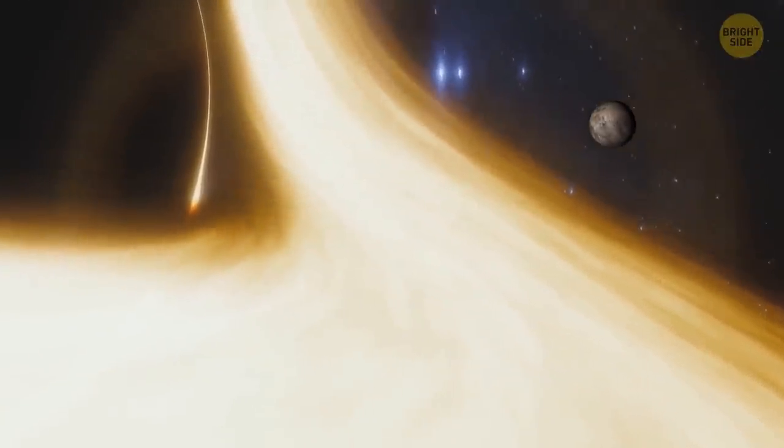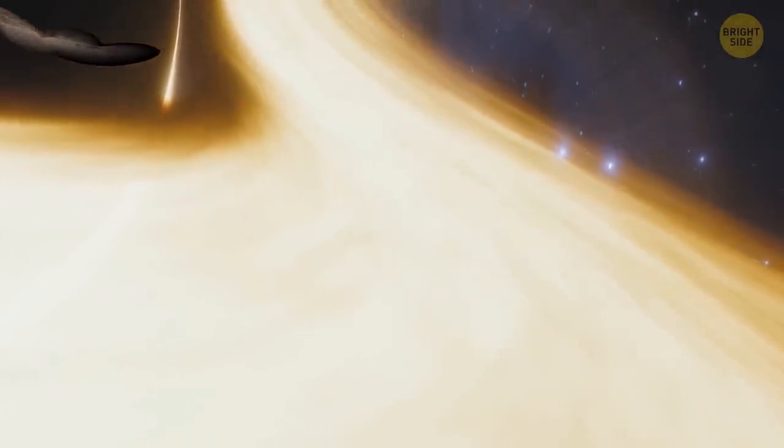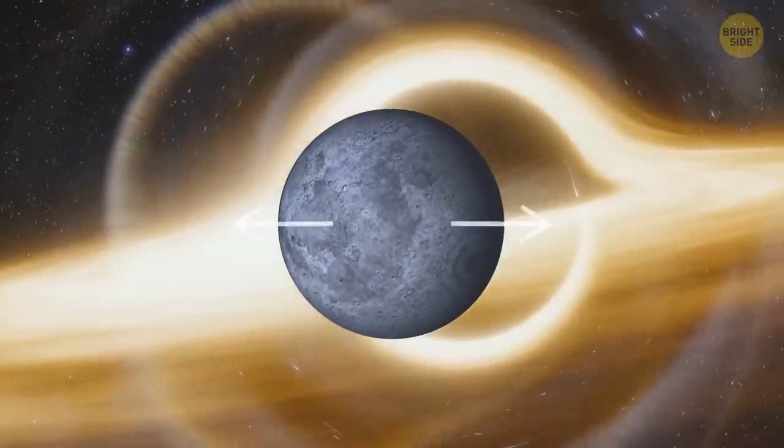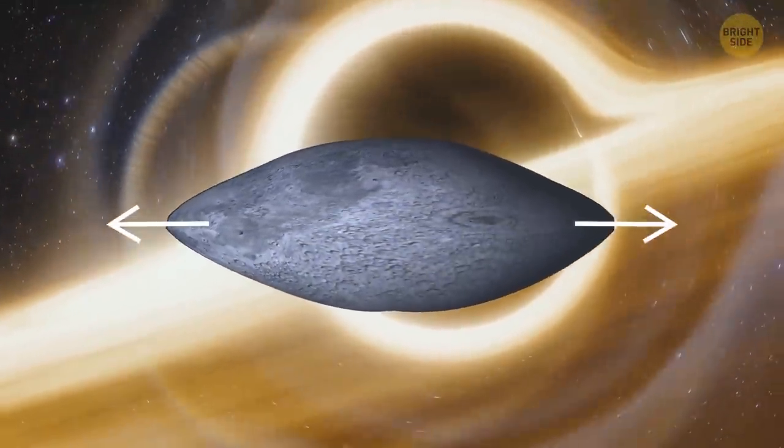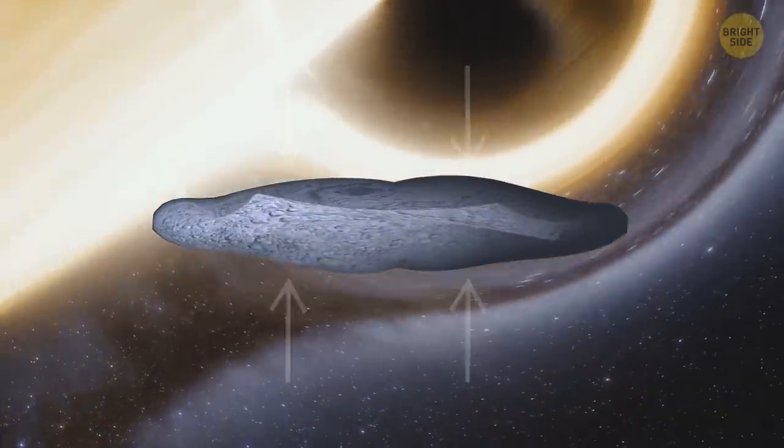When something goes into a black hole, it changes shape and gets stretched out just like spaghetti. It happens because gravitational force is trying to stretch an object in one direction, but at the same time, squeeze it in another. Like a pasta paradox.